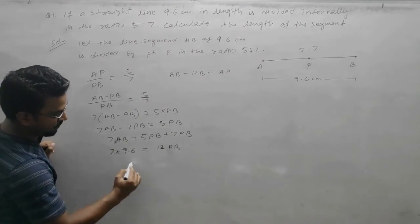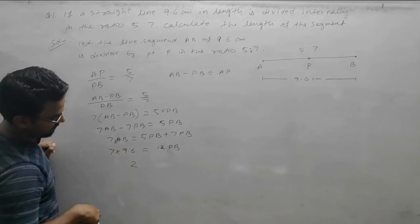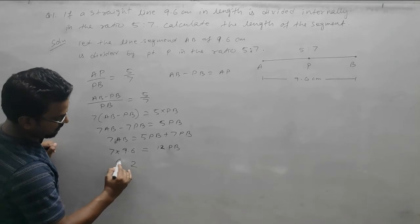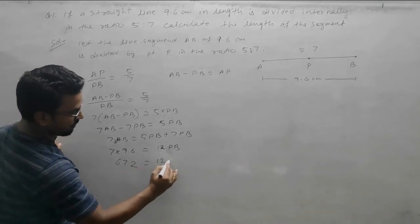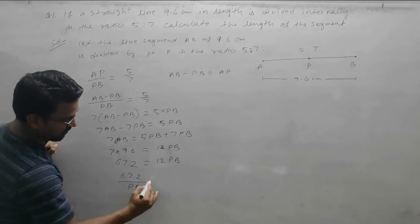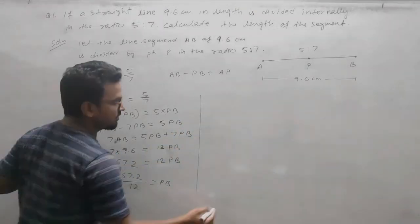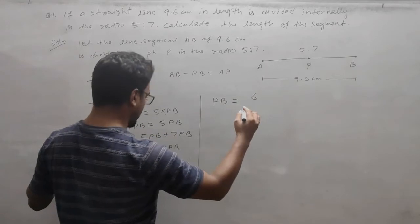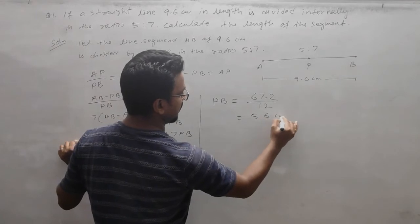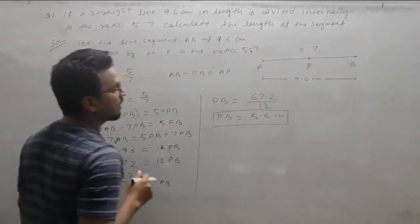Since AB is 9.6, we get 12PB = 7 × 9.6 = 67.2. Dividing by 12: PB = 67.2/12 = 5.6 centimeters.